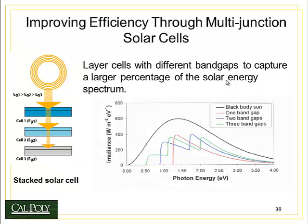This is actually being done today by using what are called multi-junction solar cells. Basically you take multiple semiconductors of different band gaps and stack them on top of one another. As the light is transmitted through each layer of semiconductor, the layer beneath it picks up a small fraction more of that spectrum.